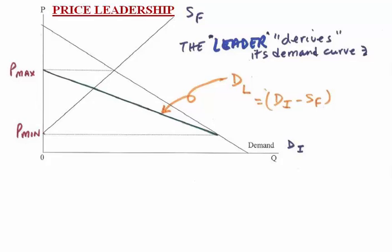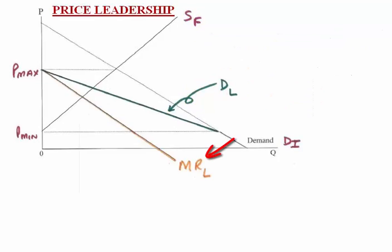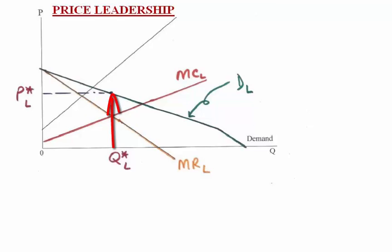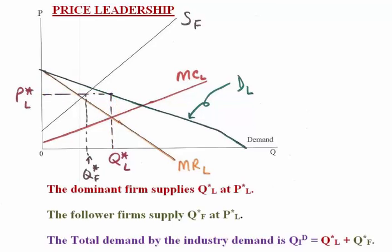We then calculate the marginal revenue, which slopes twice as steeply as the demand curve for the leader, and the marginal cost curve for the leader. The intersection of the marginal cost and marginal revenue for the leader gives us the quantity that the leader will supply. We project up to the demand curve for the leader to get the price that the leader will set. The leader is maximizing profit, and the others are satisficing — accepting that price and doing the best they can.